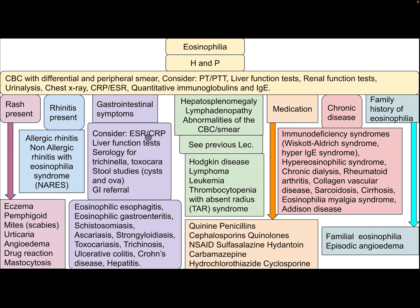If gastrointestinal symptoms are present, consider ESR, C-reactive protein, liver function test, serology for Trichinella and Toxocara, stool study for cysts and ova, and GI referral. Differential diagnosis includes eosinophilic esophagitis, eosinophilic gastroenteritis, schistosomiasis, ascariasis, Strongyloides, toxocariasis, trichinosis, ulcerative colitis, Crohn's disease, and hepatitis.